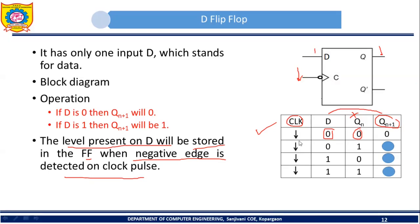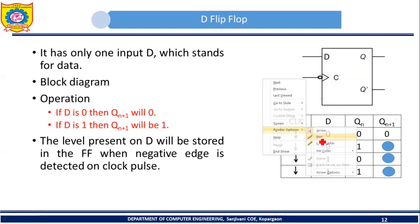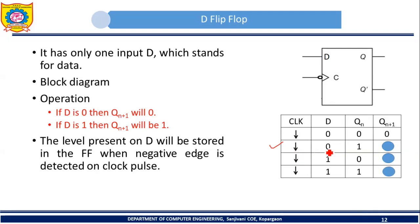Consider the next row: again a negative edge is detected. D is 0 but the present state is 1. Since the next state does not depend on the present state, it depends only on input D, so the next state will be 0. Similarly, when D is 1 the next state will be 1, and again when D is 1 the next state is 1. So in the case of D flip-flop, the next state follows the input: if I apply 0 the next state is 0, and if I apply 1 the next state is 1.